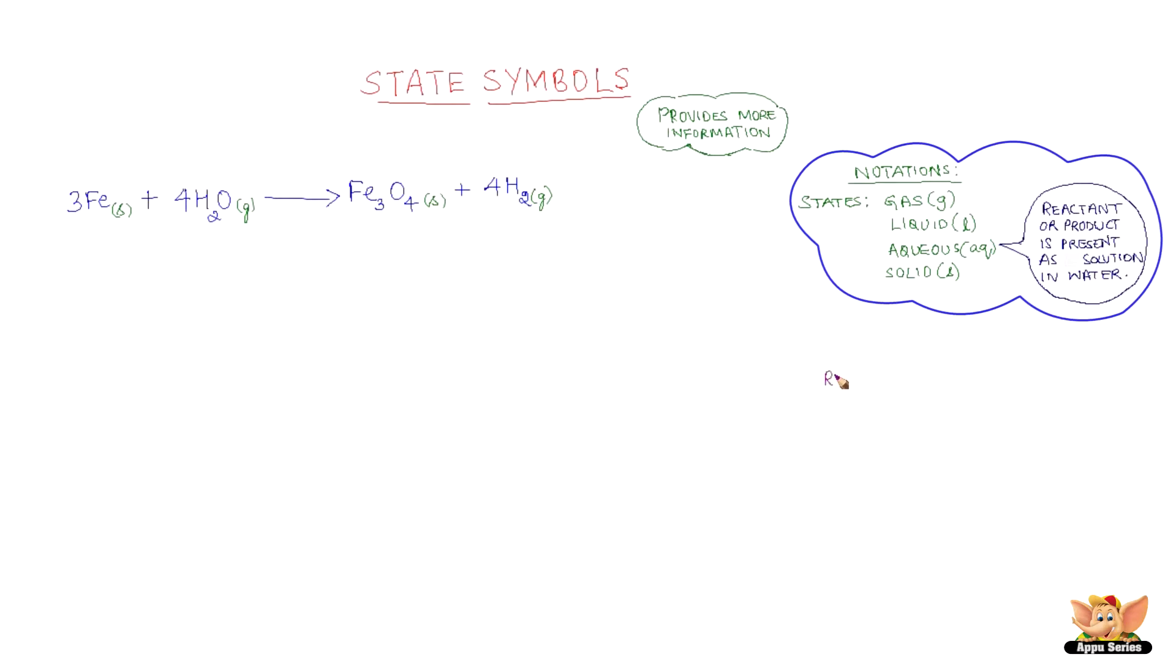We can add additional information to the chemical equation by specifying the reaction conditions. This can indicate pressure, temperature or catalyst and is written above or below the arrow mark.